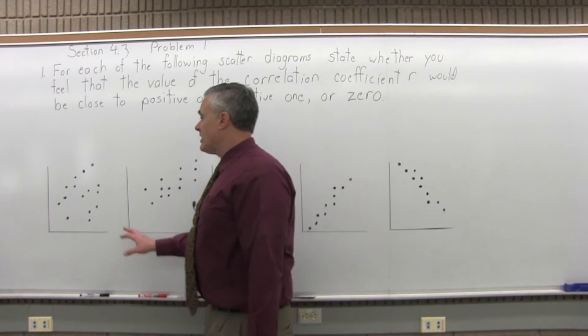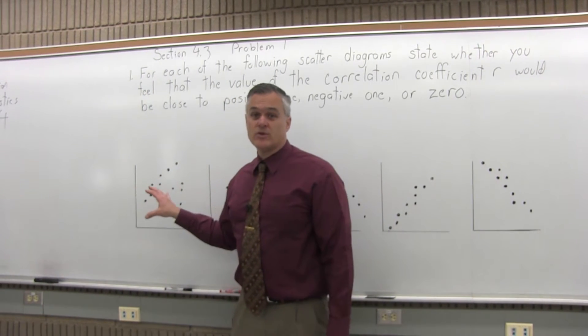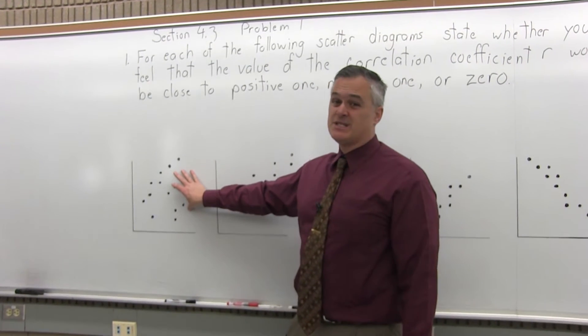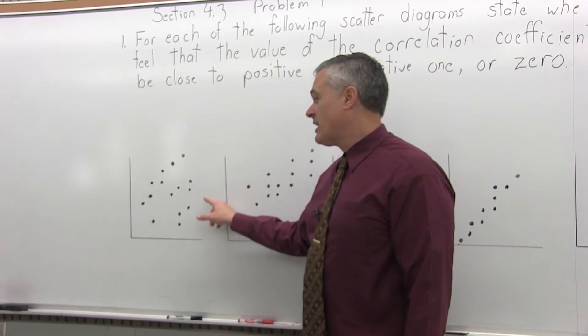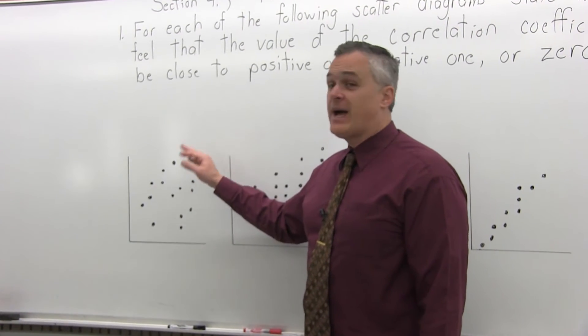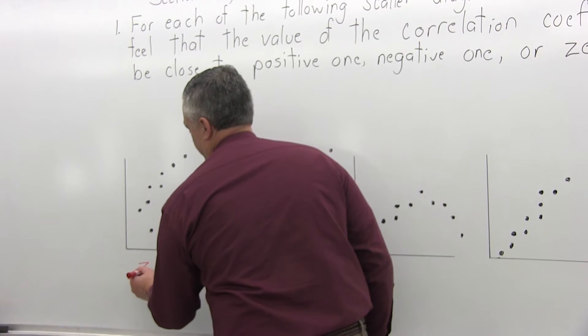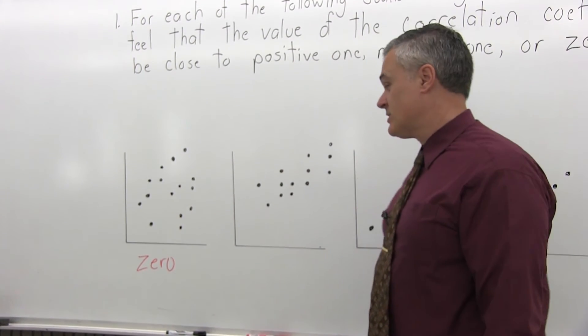So for the first scatter diagram, we have a lot of different data points. They're spread out really all over the place. So for the first one, I'm going to say it's close to 0. You really don't see a straight line going diagonally, side to side, up and down, or whatever. So I say 0 for the first one.